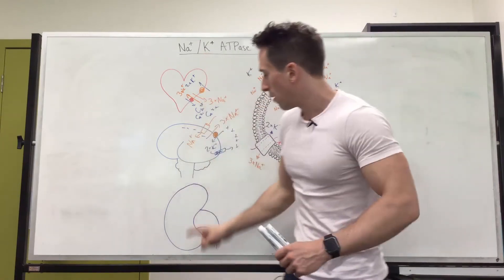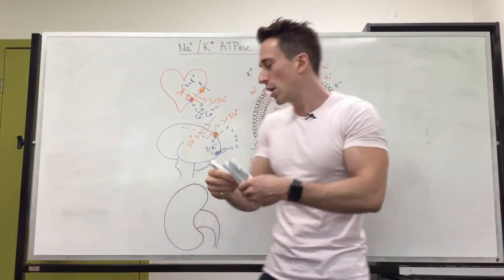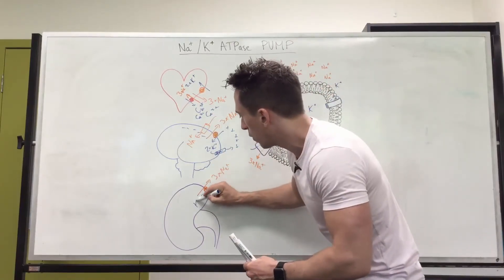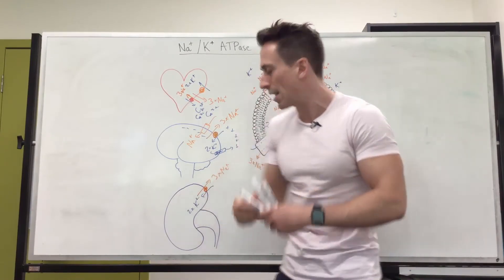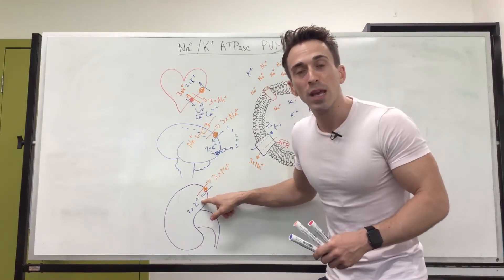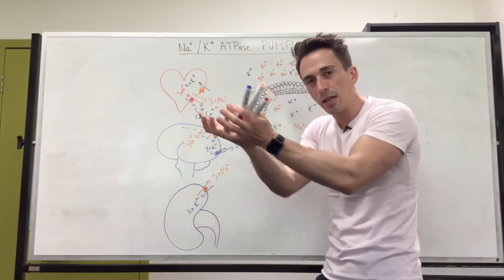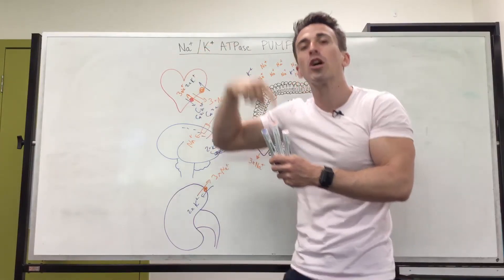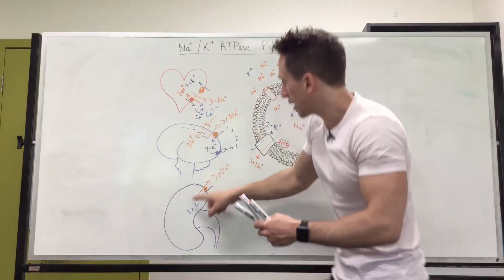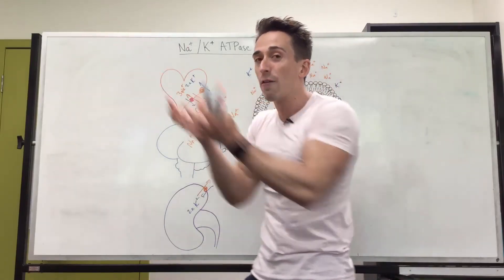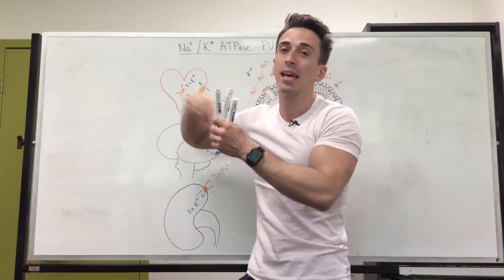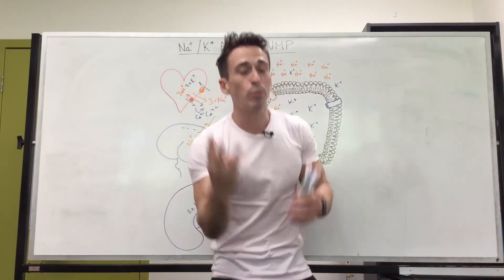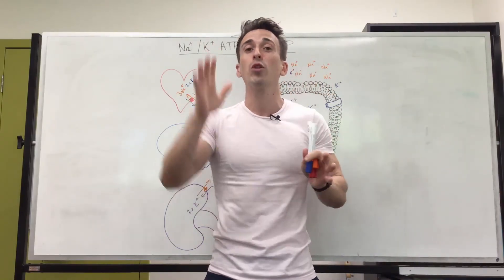Why is the sodium potassium ATPase pump important for our kidneys? When the pump throws three sodium outside the cell and two potassium inside the cell, the cells of our kidneys become nearly empty of sodium. When blood filters sodium into the kidneys and it moves through the tubes of the kidneys, the sodium sees that these cells have no sodium in them and wants to jump in down its chemical gradient. When it jumps into the cells, it can then jump back out into the body. This is how our kidneys filter everything and then return 99% of it back, all because of the sodium potassium ATPase pump establishing a chemical gradient. These are just three examples of why the sodium potassium ATPase pump is important for you to understand.